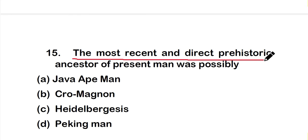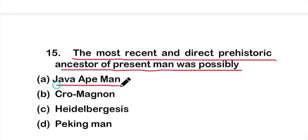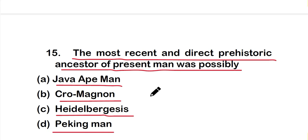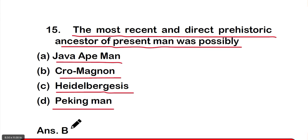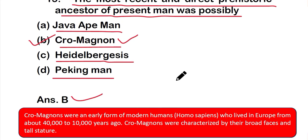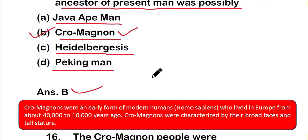Question 15: The most recent and direct prehistoric ancestor of present man was possibly — option A: Java ape-man, option B: Cro-Magnon, option C: Heidelberg man, or option D: Peking man. The correct answer is option B — Cro-Magnon. Cro-Magnon were an early form of modern humans (Homo sapiens) who lived in Europe from about 40,000 to 10,000 years ago. They were characterized by their broad face and tall structure.